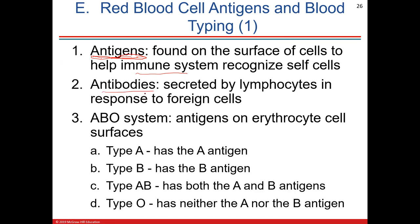If someone has the antibody — if you're type A — you can't receive type B blood because B has anti-A antibodies. The ABO system: you can be type A, type B, type AB, or type O. If you're type A, you have the A antigen on the surface of your red blood cells. Type B has only the B antigen. Type AB has both antigens. Type O has no antigens.